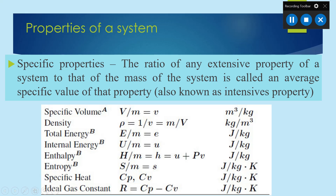Density is mass divided by volume. Other terms include total energy, internal energy, enthalpy, and entropy — all of these divided by mass give the specific properties of that property. So specific energy, specific internal energy, specific enthalpy, specific entropy, and specific heats CP and CV are all specific properties. We will discuss these in detail in the upcoming lectures.